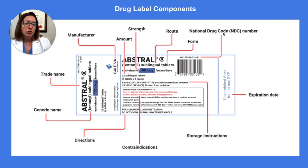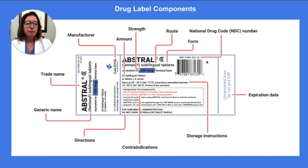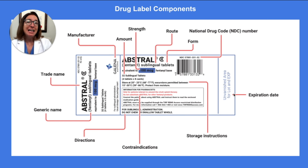The national drug code number is pointed out over here. You won't need to know that for doing dose calculation problems, but it's just a way for the FDA to identify this medication. The expiration date will be over here — it's actually not here in this particular example, but normally you will find it here on the end. And then we have storage instructions pointed out here.